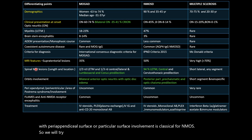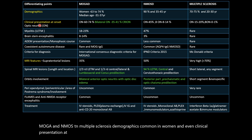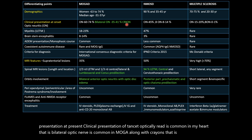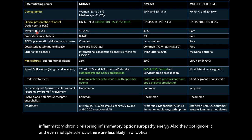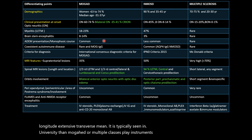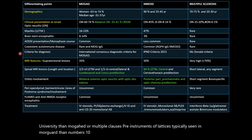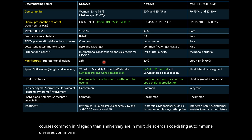Key differentiating points: All three conditions are more common in women. Bilateral optic neuritis and CRION are common in MOGARD; optic neuritis also occurs in NMOSD; MS is less likely to have optic neuritis. Longitudinally extensive transverse myelitis is typically seen in NMOSD. Brainstem encephalitis is typically seen in MOGARD. ADEM-like monophasic course is common in MOGARD. Coexisting autoimmune disease is more common in NMOSD.